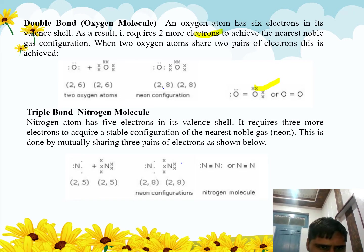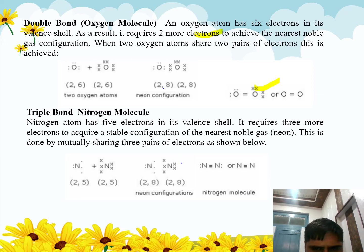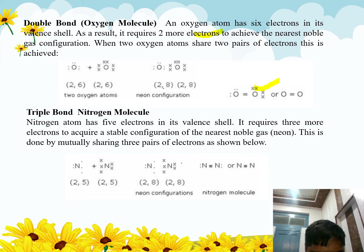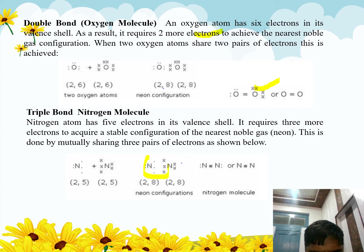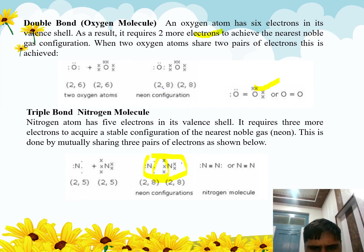For a triple bond, consider the nitrogen molecule. Nitrogen has five valence electrons and requires three more electrons to acquire a noble gas configuration. This is done by the mutual sharing of three electron pairs between the two nitrogen atoms, forming an N≡N triple bond. Each nitrogen atom then has the configuration of two and eight, meaning eight valence electrons — achieving the noble gas configuration.